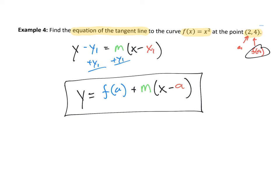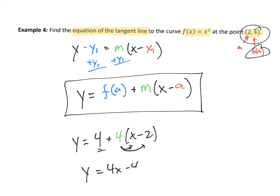We have all the information. F of a is 4, the slope m we computed in the last problem is also 4, and a is 2 — so we write y equals 4 plus 4 times x minus 2. Distributing the 4 gives 4x minus 8, then adding the plus 4, the equation of the tangent line is y equals 4x minus 4. This was really just an algebra exercise because we already figured out m equals 4 using the limit of the difference quotient.